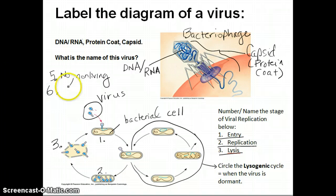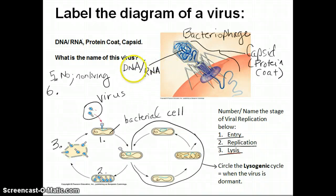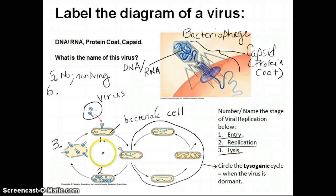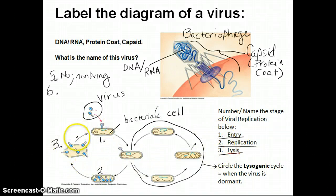For number six on your notes where it says label these structures, make sure you've labeled the two main parts: the DNA/RNA inside the head part of the virus, and the outer structure called the capsid. Also down here, make sure you've labeled entry, replication, and lysis as steps one, two, and three, and circled the lysogenic cycle.